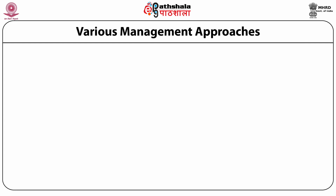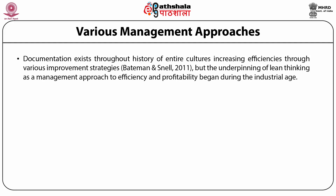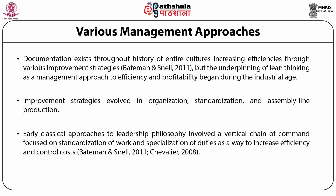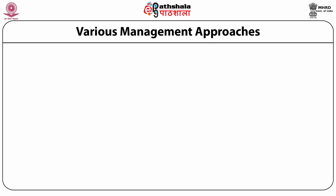Various management approaches and documentation exist throughout the history of entire cultures increasing efficiencies through various improvement strategies. But the underpinning of lean thinking as a management approach to efficiency and profitability began during the industrial age. Improvement strategy evolved in organizations through standardization and assembly line production. Early classical approaches to leadership philosophy involved a vertical chain of command focused on standardization of work and specification of duties as a way of increasing efficiency and control.